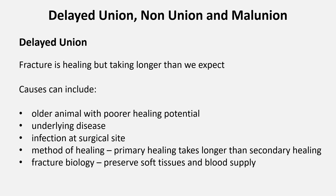Delayed union, non-union and malunion. A delayed union occurs when the bone is healing well but just not in the timescale we would expect — it's taking longer than expected to heal. It should go on to heal eventually, as long as the implants can provide stability for long enough. If it looks like this is not the case, then revision surgery may be required depending on the reason for the delayed union.